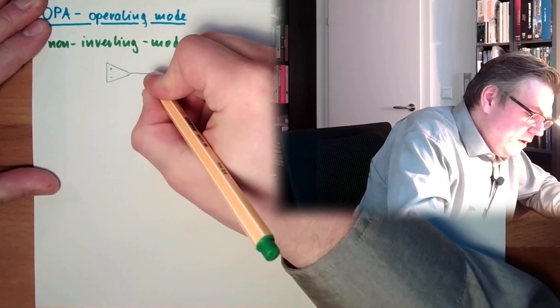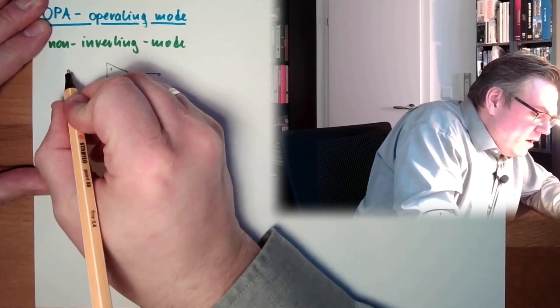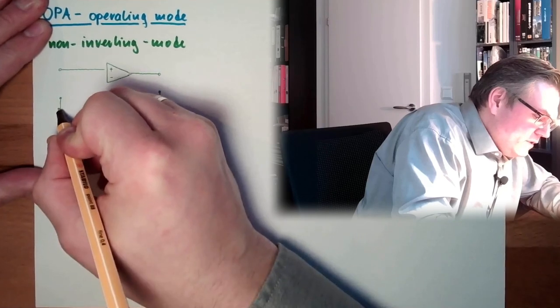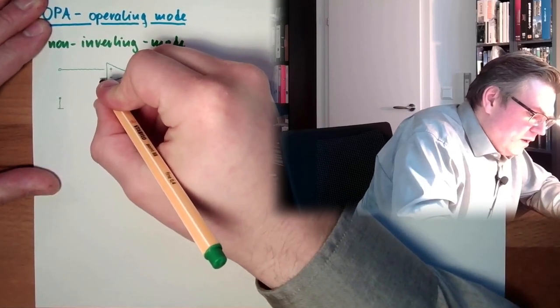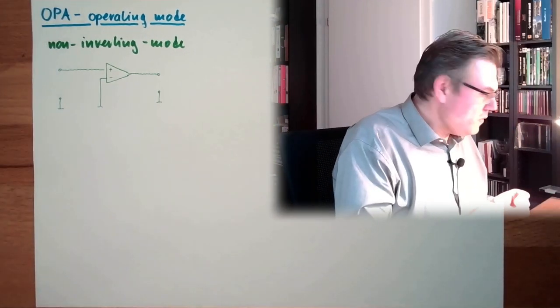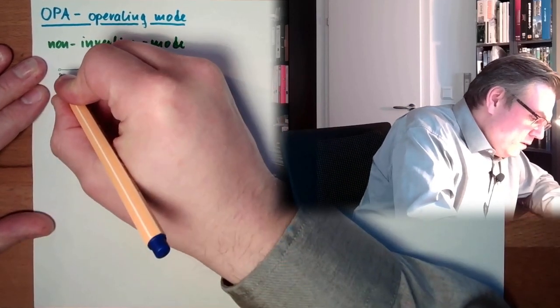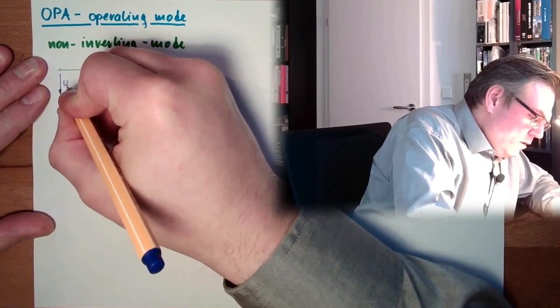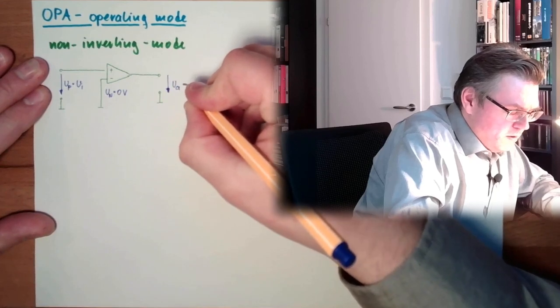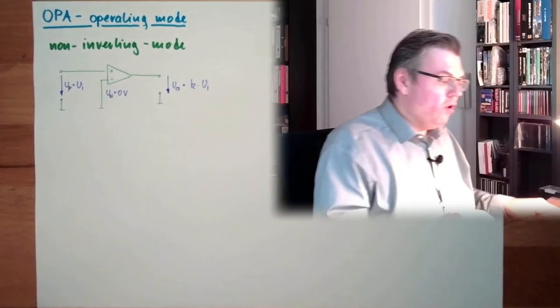Plus and minus. Here we have our output. Here the input I will put on the positive side. And this one, the negative side, I will simply put to ground. So, the UN is zero volt. UB equals UI. And here the UA is K multiplied by UI.